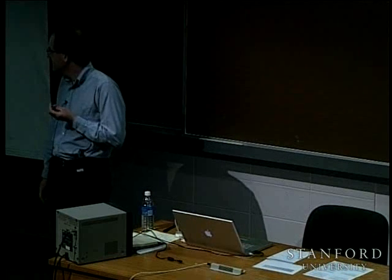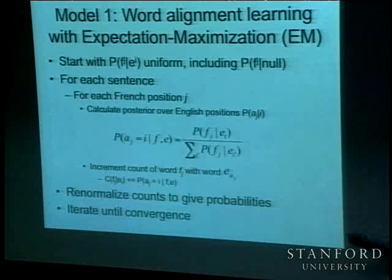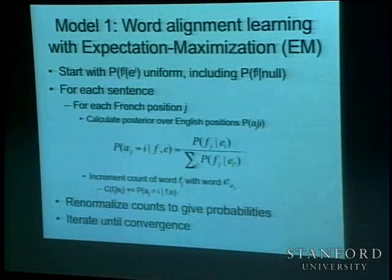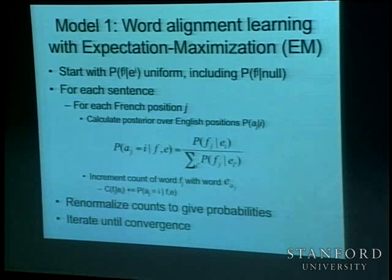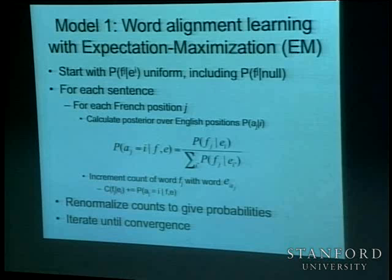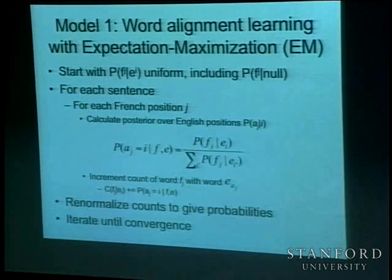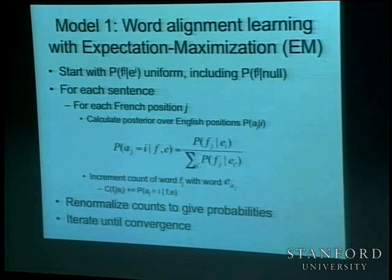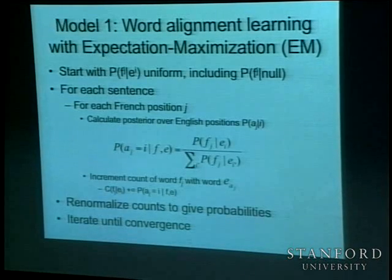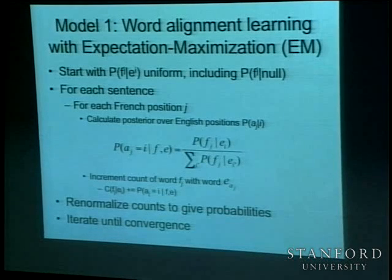What you're doing here for learning these alignment models is unsupervised learning. It's actually one of the best cases of large-scale unsupervised learning that actually works really well. All the state-of-the-art big statistical machine translation systems — for the alignment algorithms, everyone uses souped-up versions of this, doing unsupervised alignment algorithms, and they just work extremely well once you have tons of data.